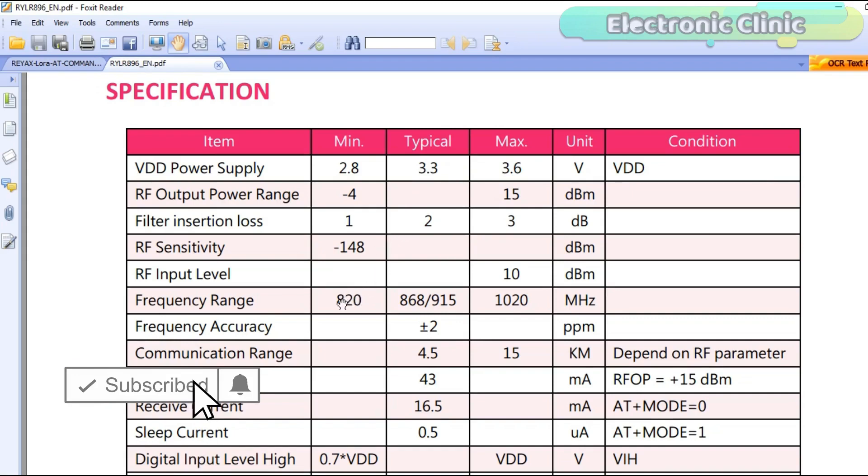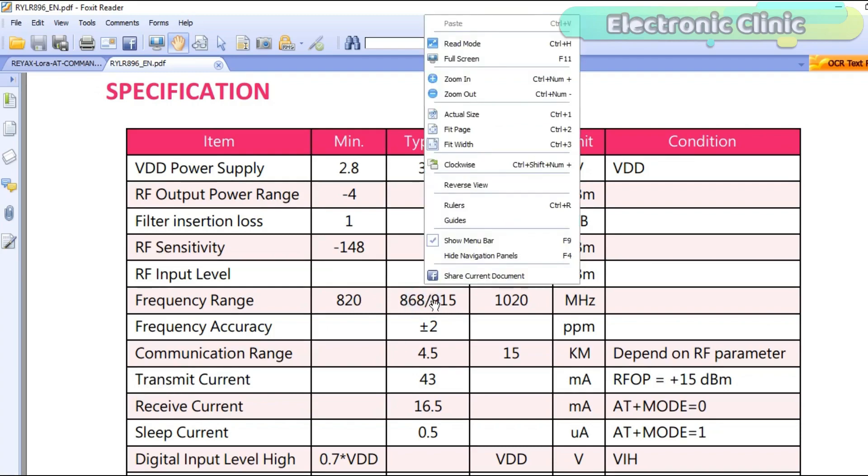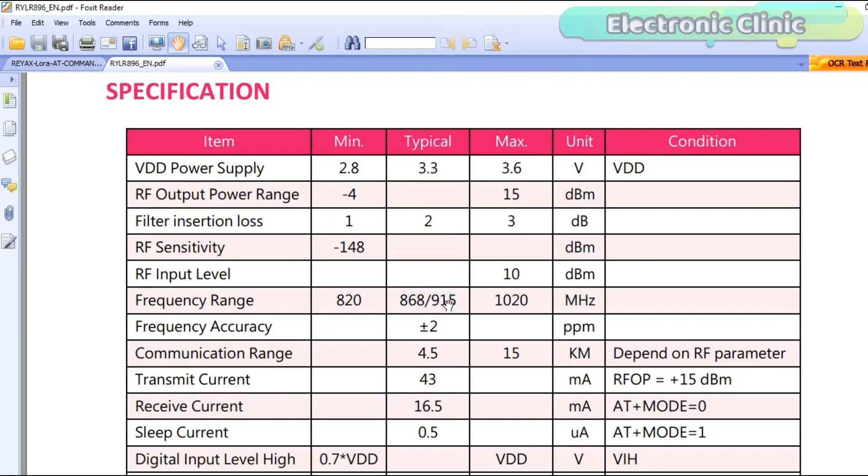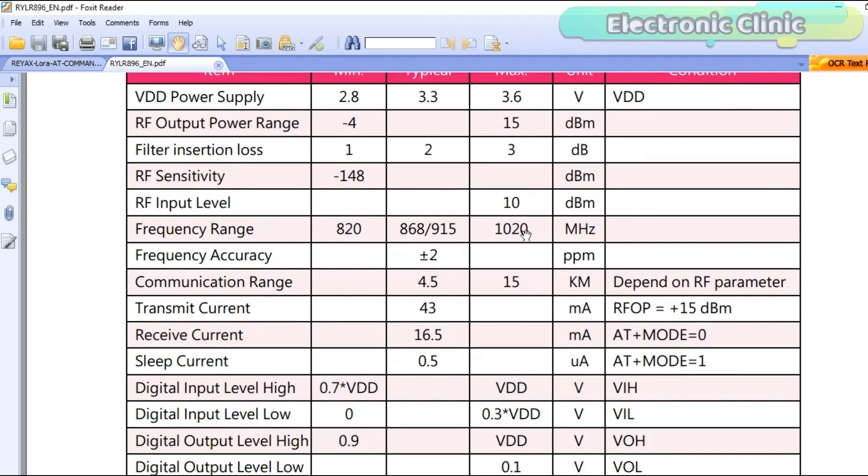Minimum frequency range is 820 megahertz. Typical frequency range is from 868 to 915 megahertz. Maximum frequency range can be up to 1020 megahertz.